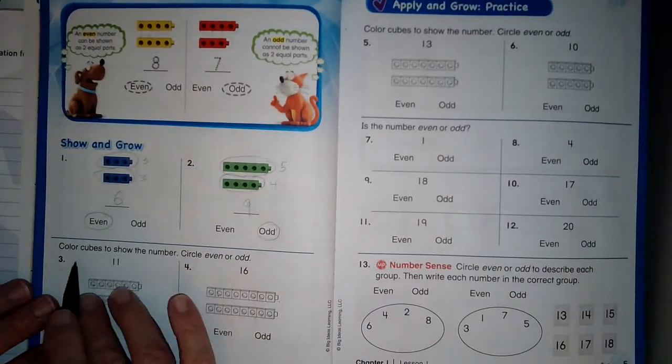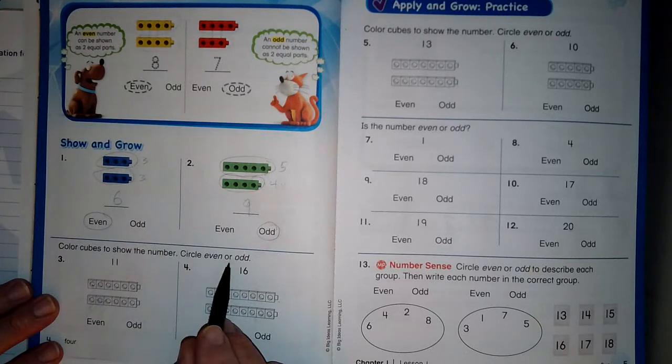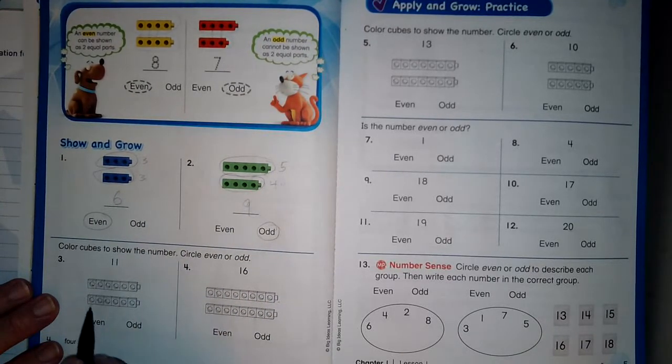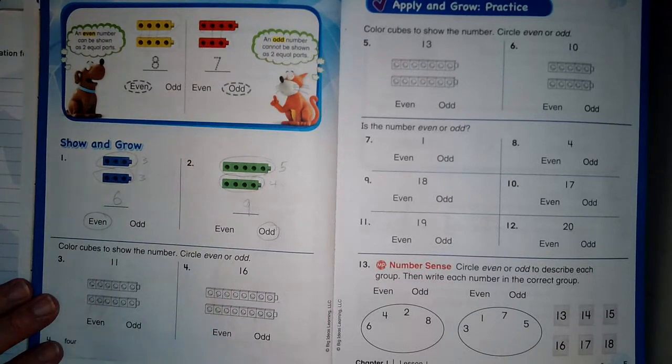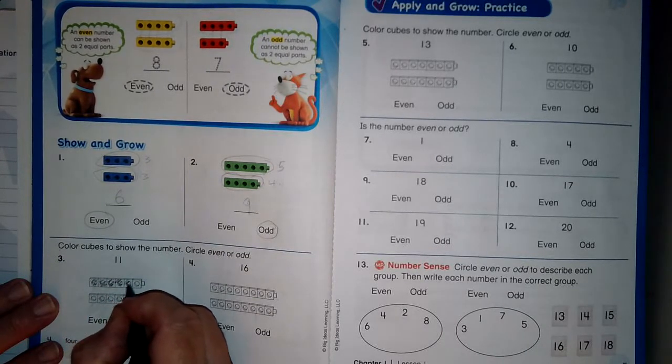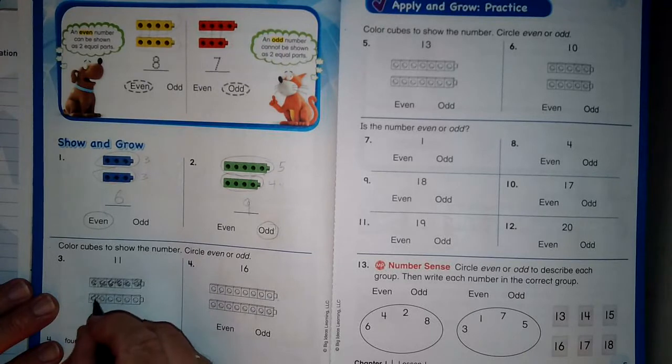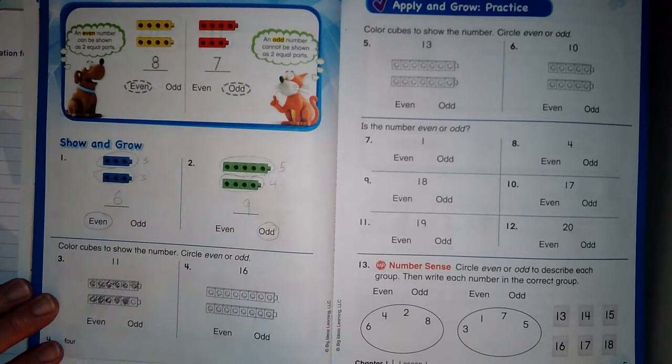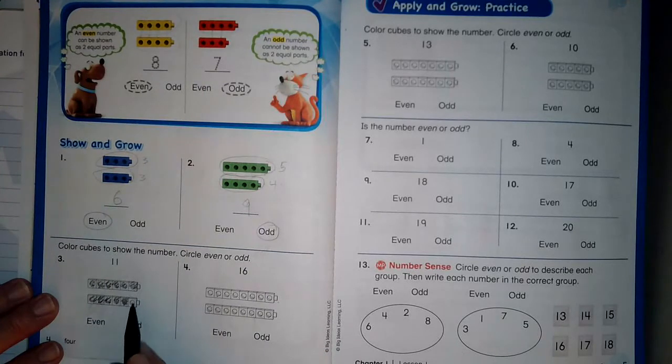All right. Color the cubes. Let's see. Circle if it's even or odd. Now, I'm going to color eleven of these cubes. If there are more, don't keep coloring. Only color to the number eleven. One, two, three, four, five, six, seven, eight, nine, ten, eleven. And then I stop. There's one left over. It doesn't have a partner.